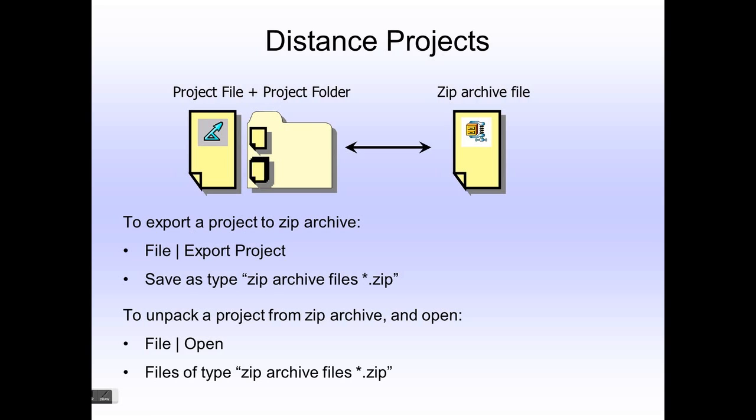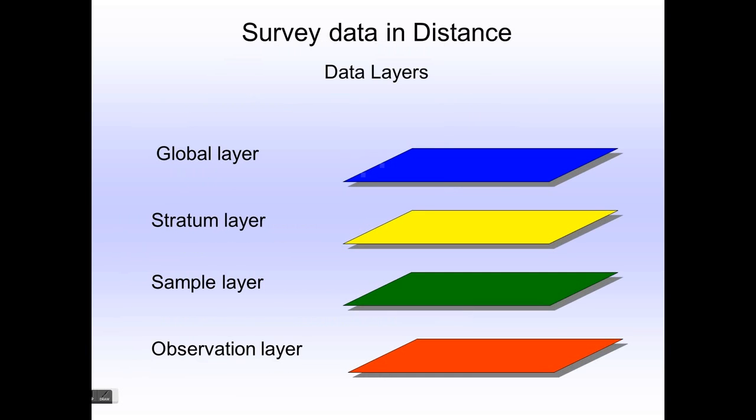However, as I said, if you want to exchange Distance information with others, you'll need to make sure that all of the bits and pieces of that information get transmitted. To do that, the best thing to do is to use the export feature of program Distance. You say file export the project as a zip file, and then all of the bits and pieces of Distance that I described earlier will go into a single zip archive file. The recipient of that archive file can then open it inside Distance because Distance knows what an archive file is and how to reconstruct a distance project from an archive file. So simply let Distance do that work for you.